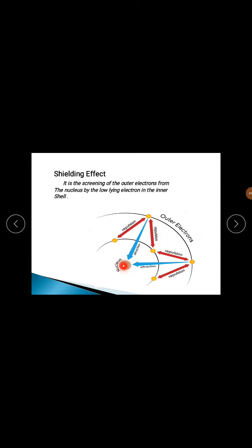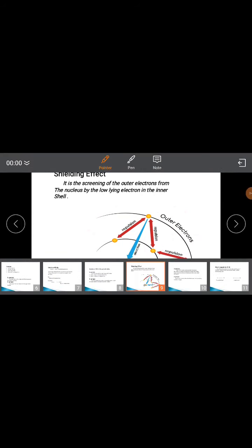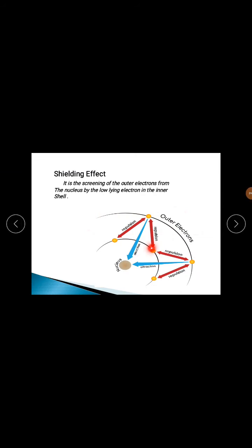What is the shielding effect? In the atom, the nucleus has electrons revolving around it. For the outermost shell electrons, the distance from the nucleus is greater, so the force of attraction is less compared to the inner electrons. The inner electrons and the outer electrons carry the same charge — negative charge. Since they carry the same charge, they repel each other, while opposite charges attract each other.